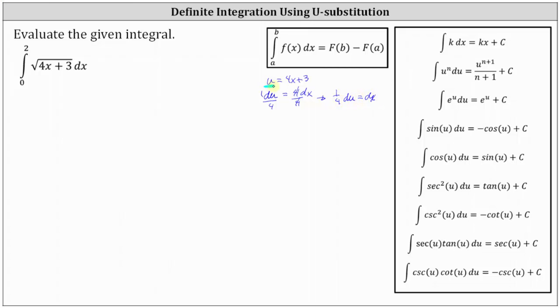And now we can substitute u for the quantity 4x plus three and one-fourth du for dx. We do need to remember though, the limits of integration from zero to two are x values, not u values. So when writing this in terms of u, we will leave the limits of integration off for now.